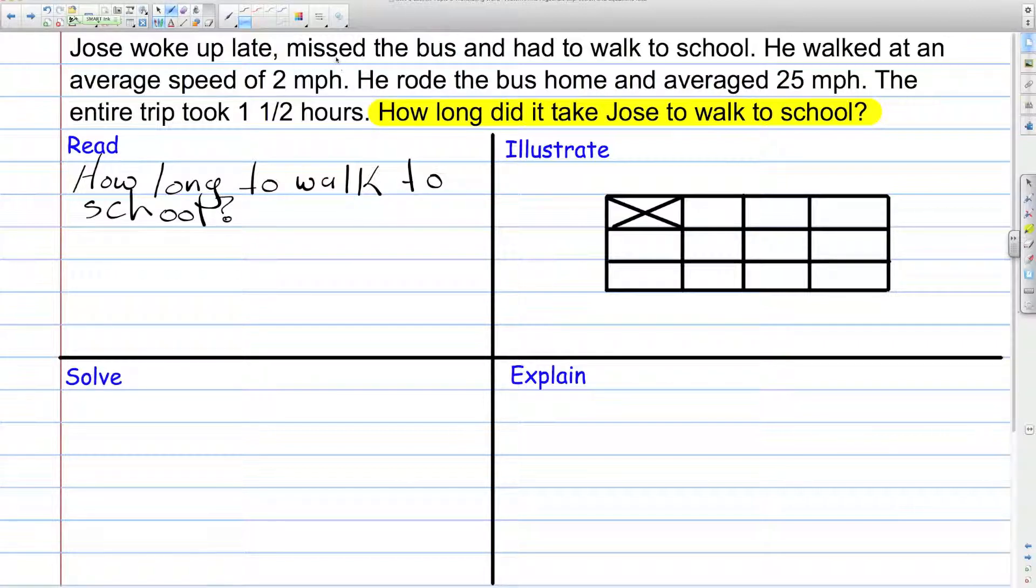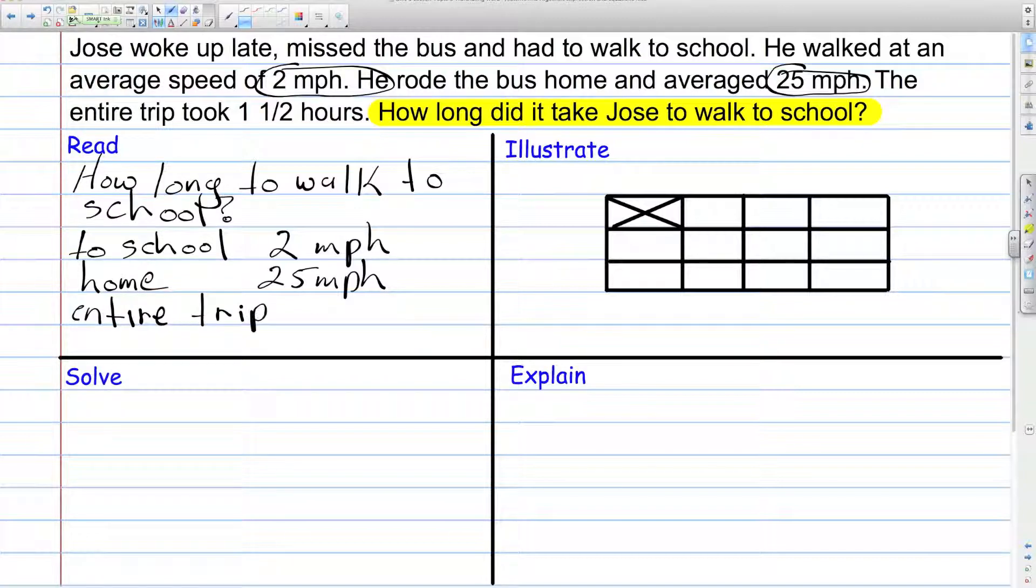Now, some important information here is, on his walk to school, he averaged 2 miles per hour. So we're going to write that down. And on the bus ride home, he rode the bus home and averaged 25 miles per hour. This is important information. Last piece of important information is that the entire trip took 1 and a half hours. You can see my handwriting's not perfect, but as long as you can read it.